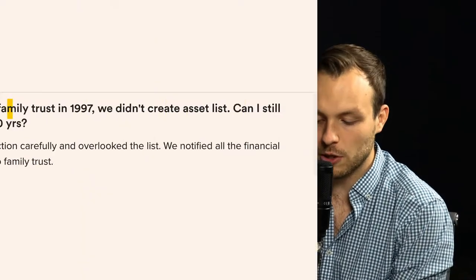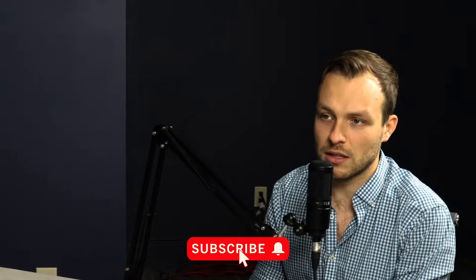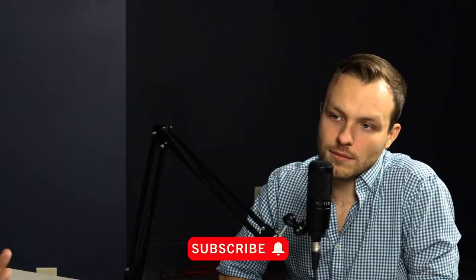When we made a revocable family trust in 1997, we didn't create an asset list. Can I still submit an asset list after over 20 years? Yes. With a revocable trust, as long as you are alive and of sound mind, you can do the funding of it. If she's writing that question, she's okay enough to do those transfers. Better late than never, as long as you're still alive.